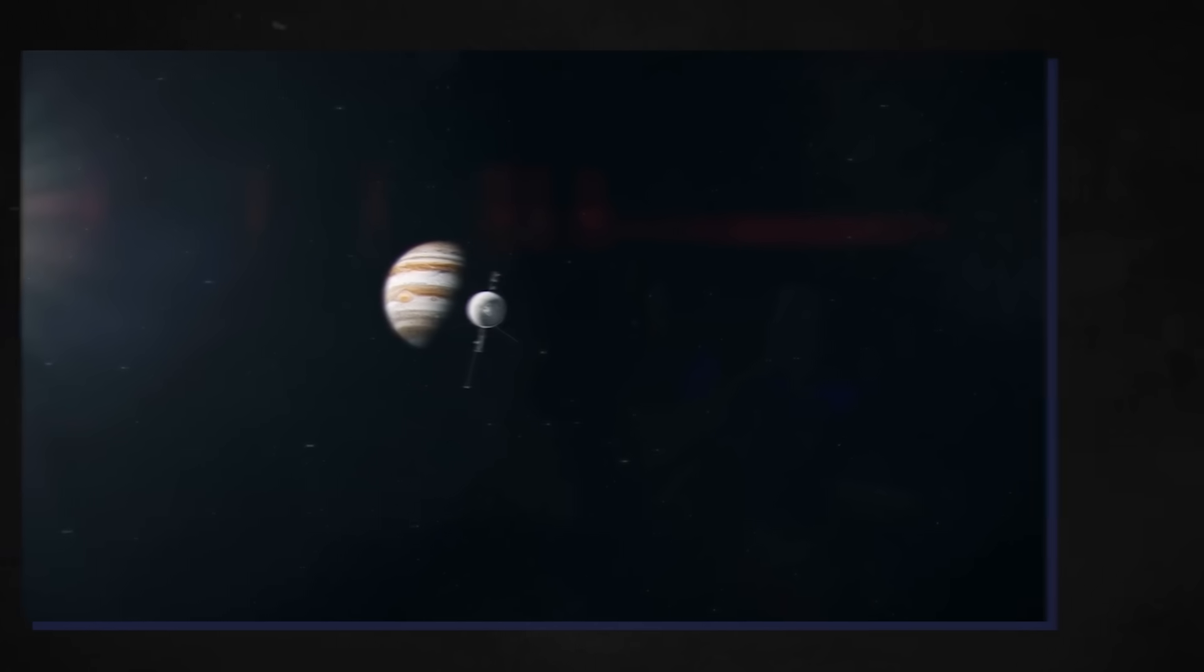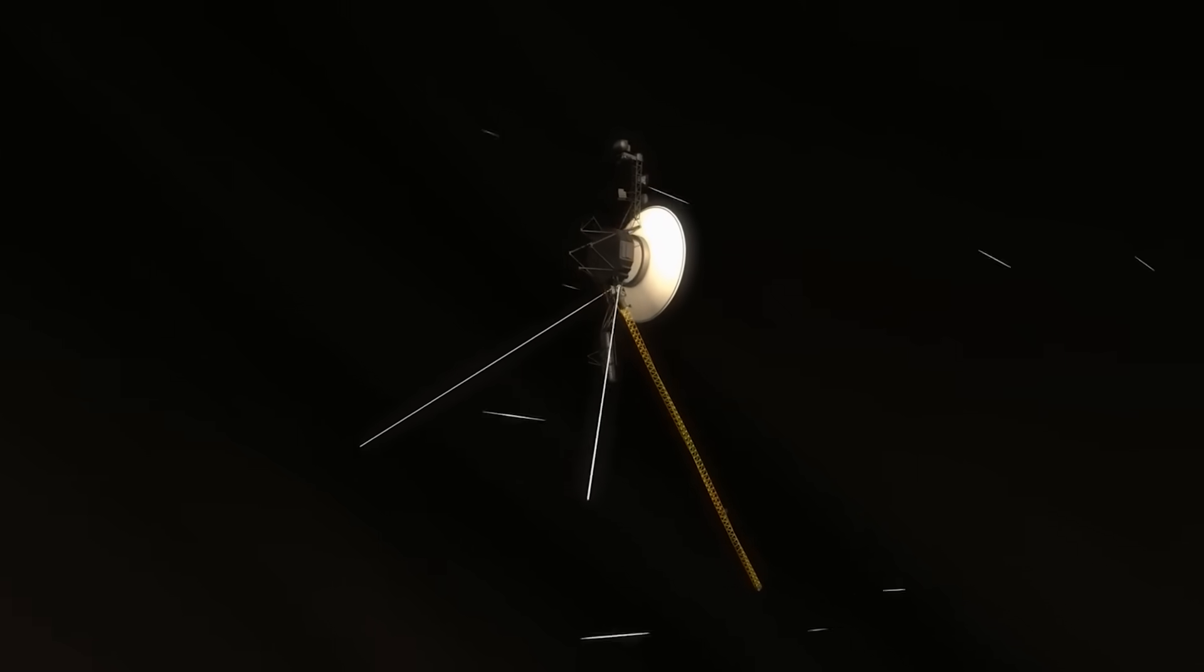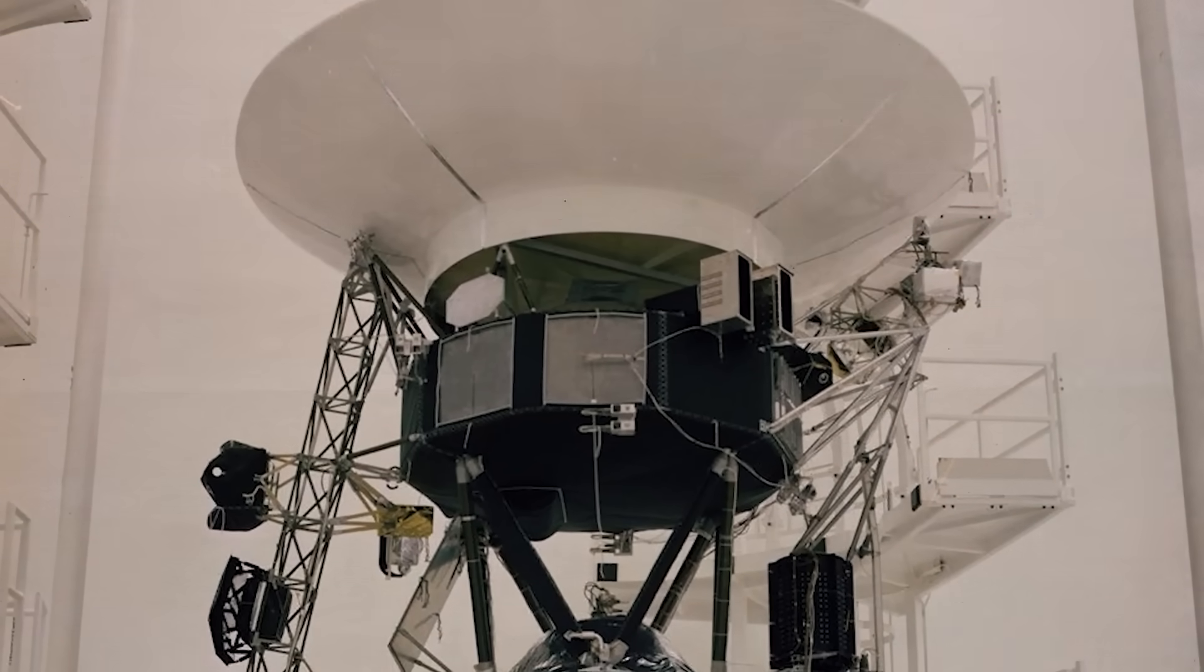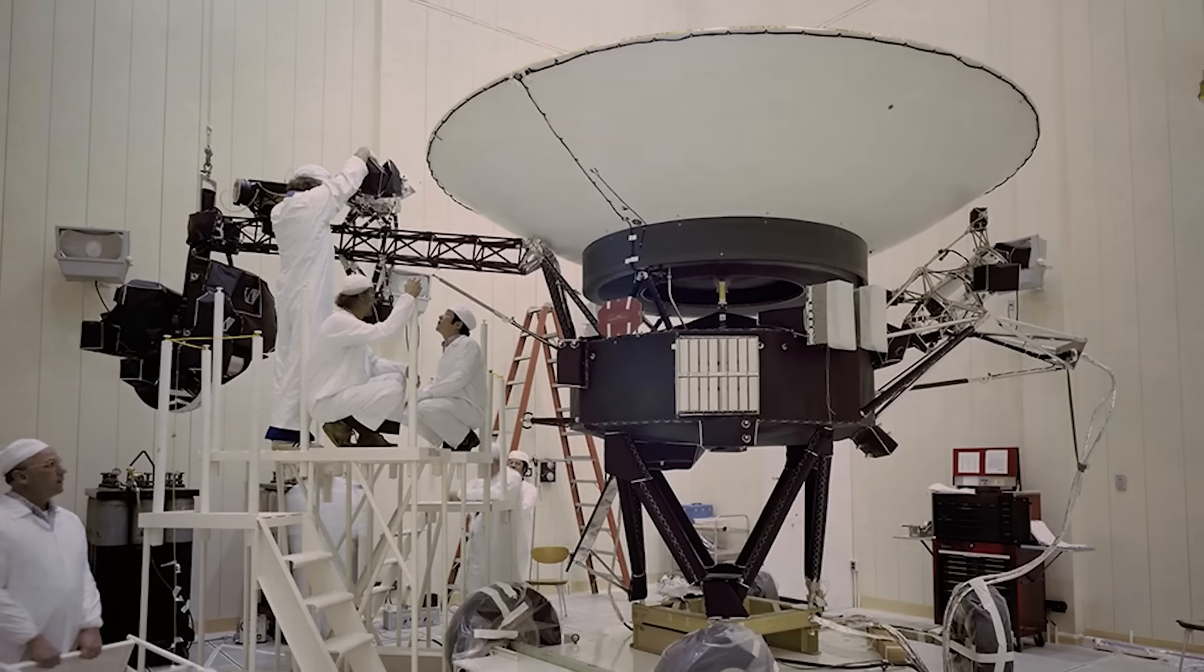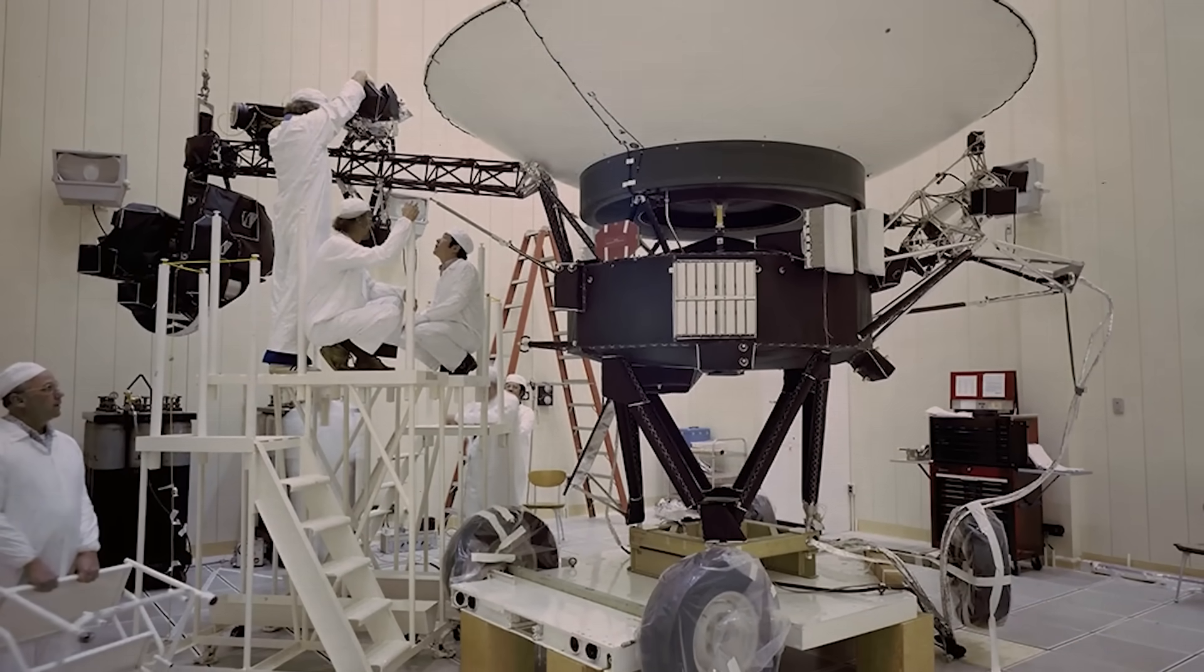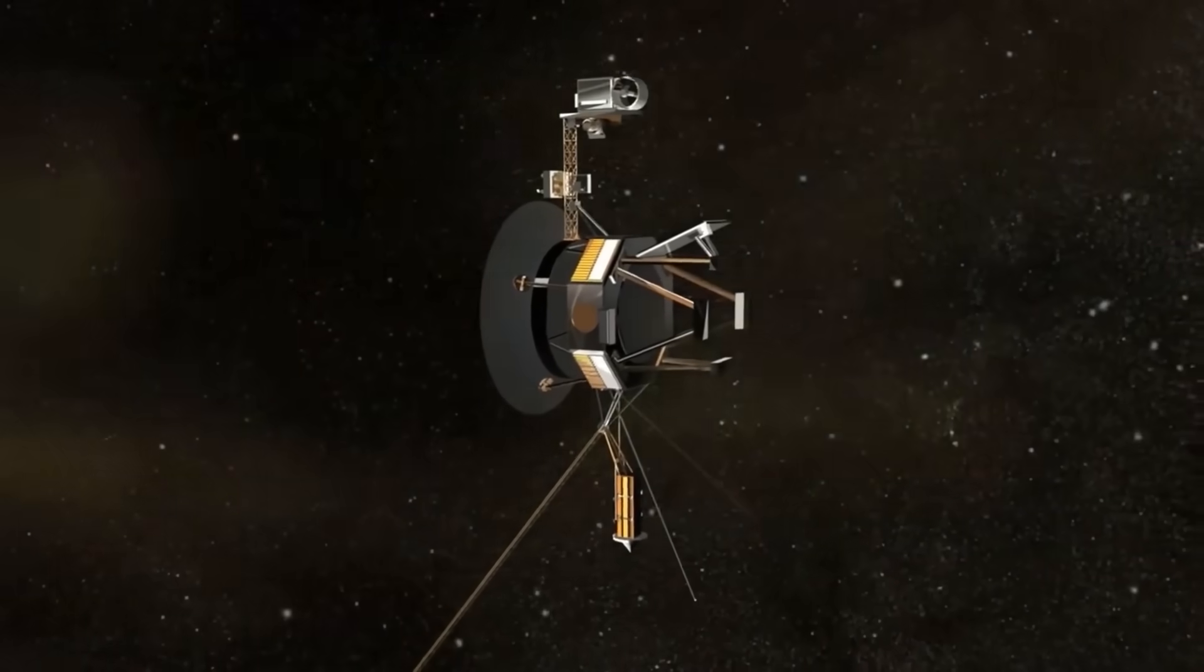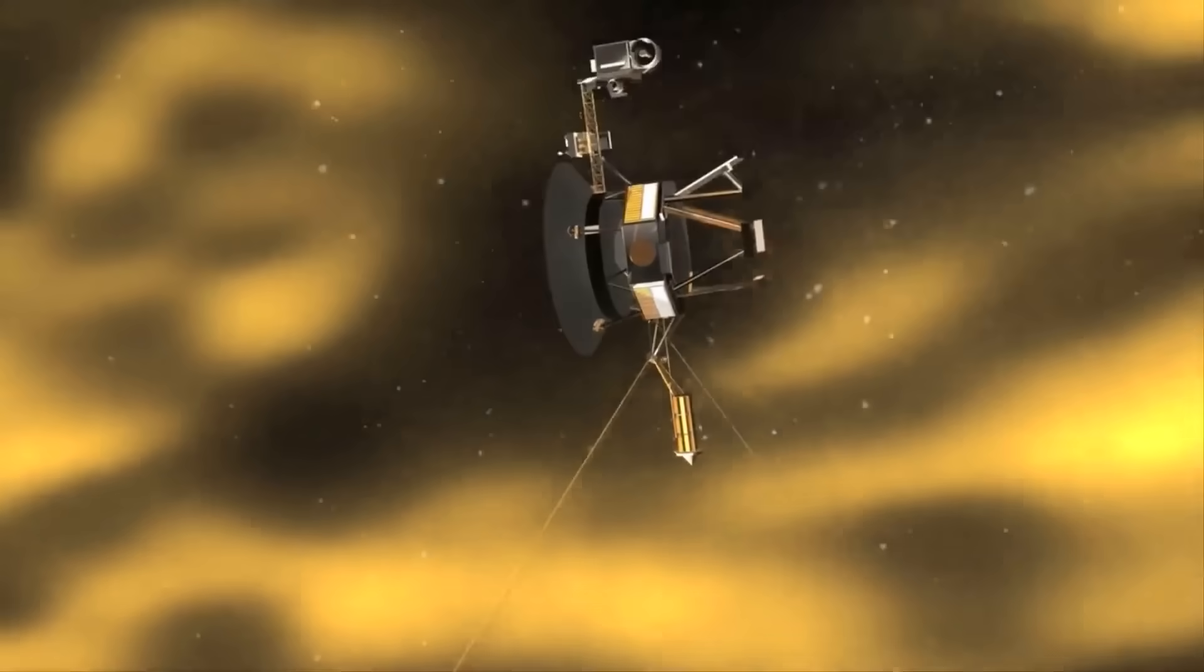But even if Dodd, Spilker, and their colleagues can keep working out these kinds of technical problems, the spacecraft's power supplies will continue to be a challenge. Their RTG systems generate energy by converting the heat produced by the radioactive decay of plutonium-238. However, the fuel is currently producing 4 watts less annually. After 46 years, in 2019, Dodd and her colleagues began shutting off heaters in some of the instruments that remained in operation after turning off any systems and devices not essential to the interplanetary mission. The lifespans of the spacecraft were extended by a few years as a result.